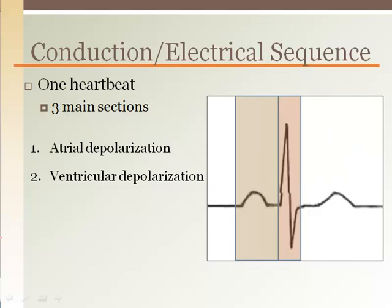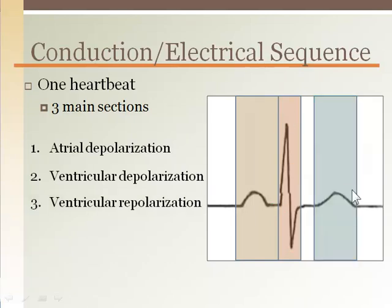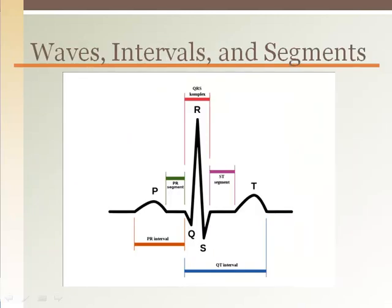R is always going to be the top. The third section is ventricular repolarization, represented as the T wave. The atria do also repolarize; however, atrial repolarization takes place during ventricular depolarization, and since the ventricles have much larger muscle mass, the electrical recording is dominated by the ventricular event, and so the atrial event is not even recorded.